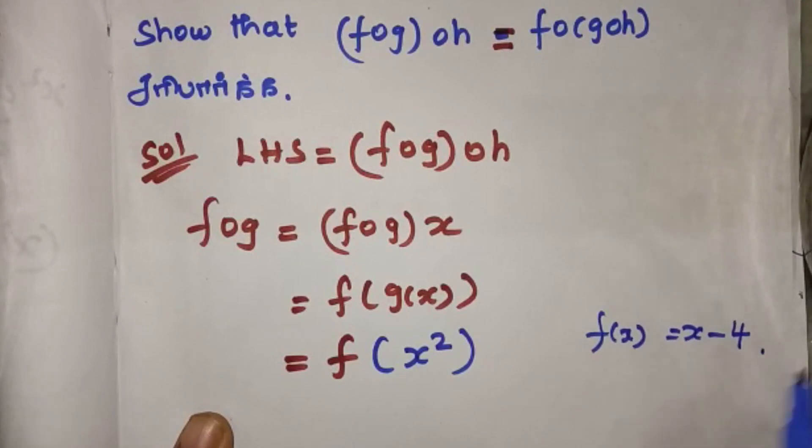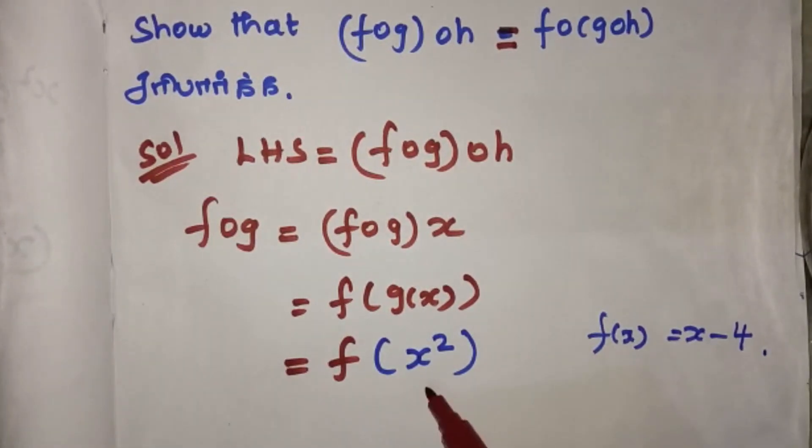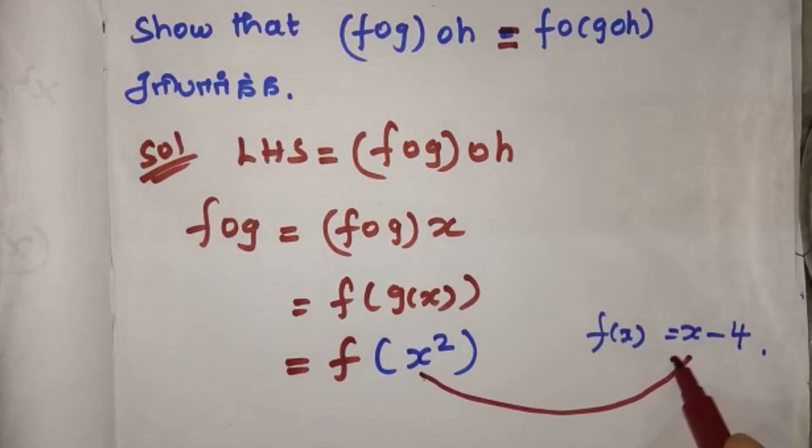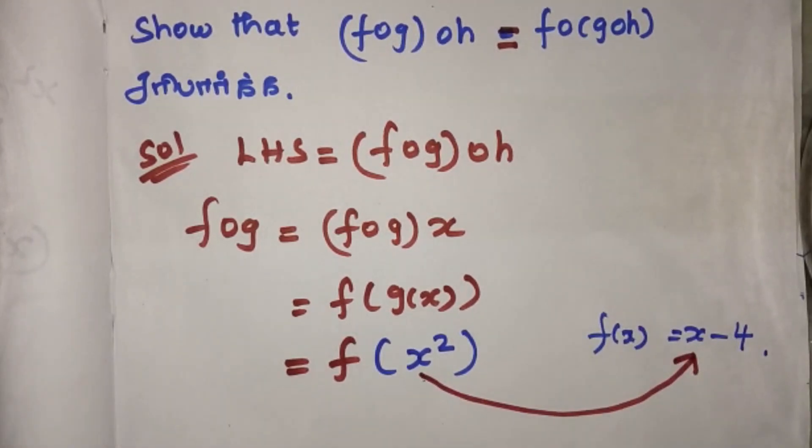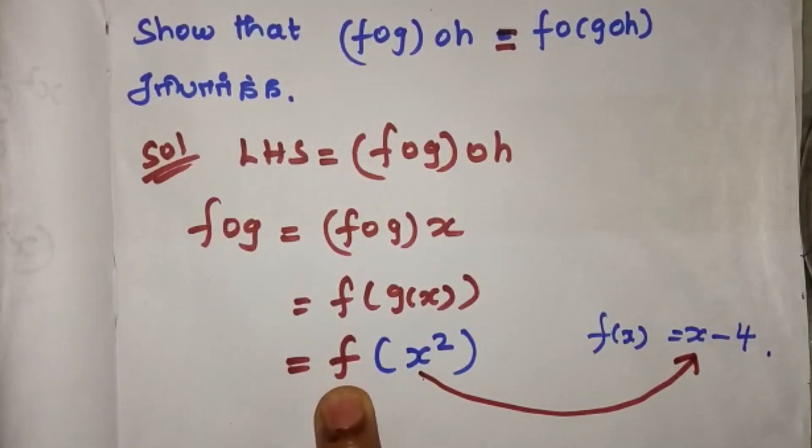Then x minus 4. Now here is x, here substitute for x. Here is f of x. Now here is f of x, here substitute for x.